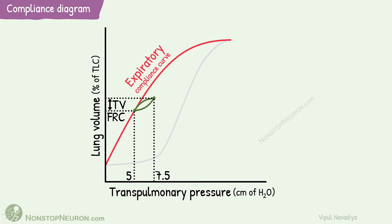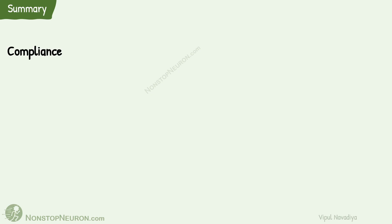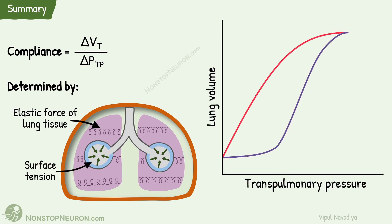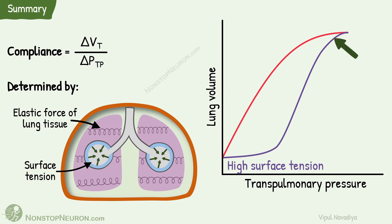That's all about compliance of lungs. Let's summarize. Compliance is the extent to which lungs expand with a unit increase in transpulmonary pressure — it's the change in lung volume divided by change in transpulmonary pressure. It is determined by the elastic forces of lung tissues and surface tension. Regarding the compliance diagram: when inflating the lungs, initially increasing transpulmonary pressure produces a small increase in lung volume due to high surface tension. With further increasing pressure, surface tension is overcome, airways open, and lungs expand almost linearly. The rate of expansion then decreases towards total lung capacity. Due to decreased surface tension from surfactants, the deflation curve takes a different route — surfactants make it easier to keep already-open airways open than to open closed airways with fewer surfactants.